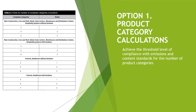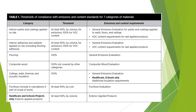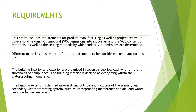To achieve this credit there are two options. Option one is product category calculations, used to achieve the threshold level of compliance with emission and content standards for a number of product categories. Materials can be broadly classified into seven categories: interior paints and coatings applied on site, interior adhesives and sealants applied on site including flooring adhesive, flooring, composite wood, ceilings, walls, thermal and acoustic insulation, furniture (included if part of the scope of work and exclusive to healthcare and school projects), and exterior applied products.